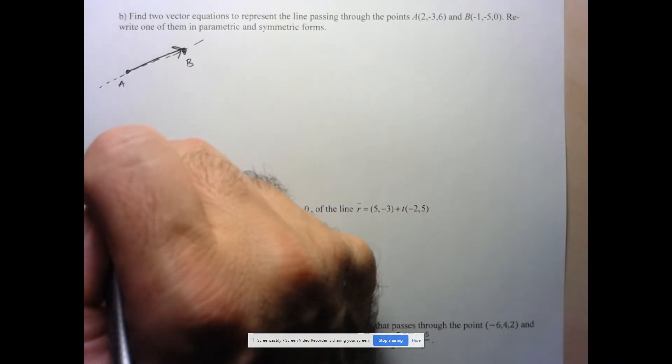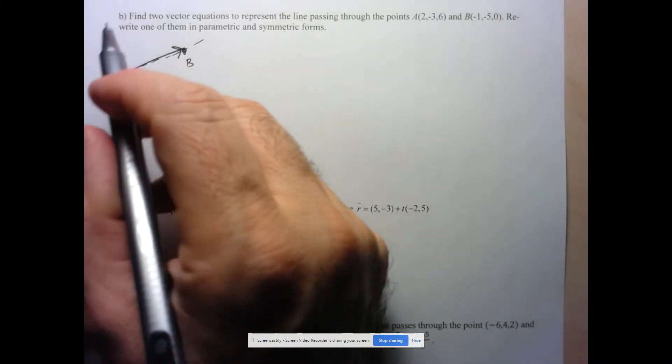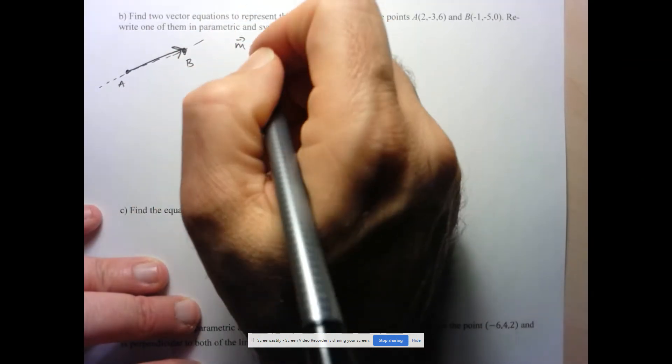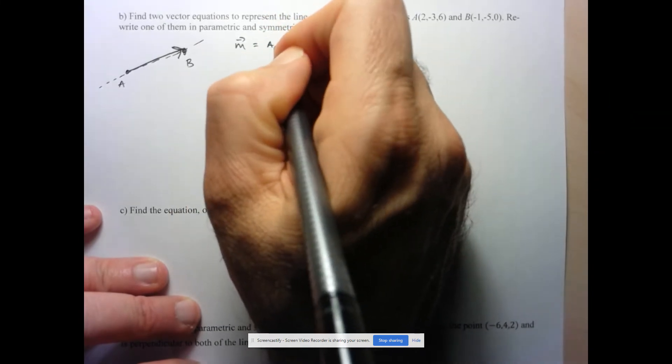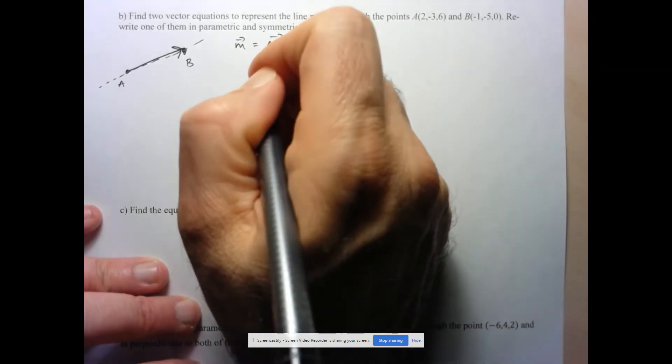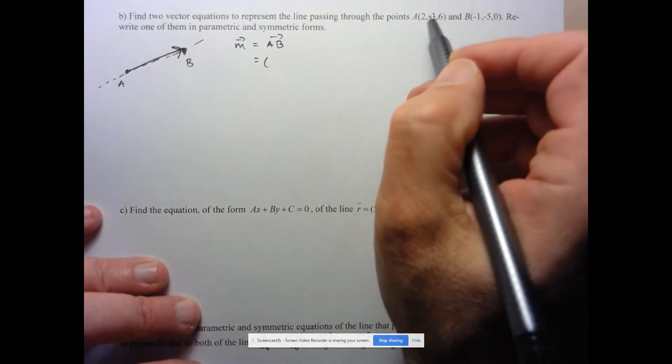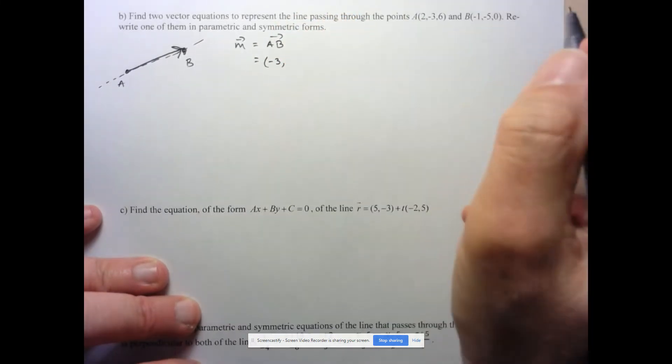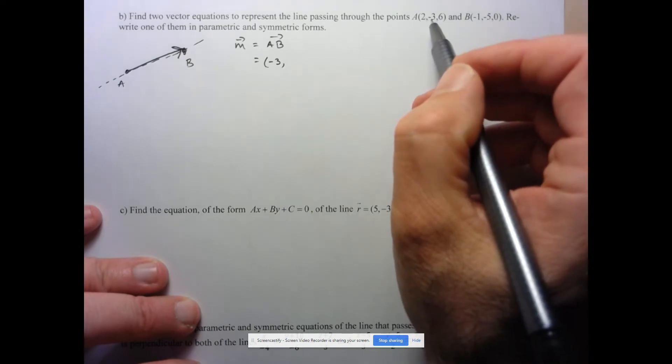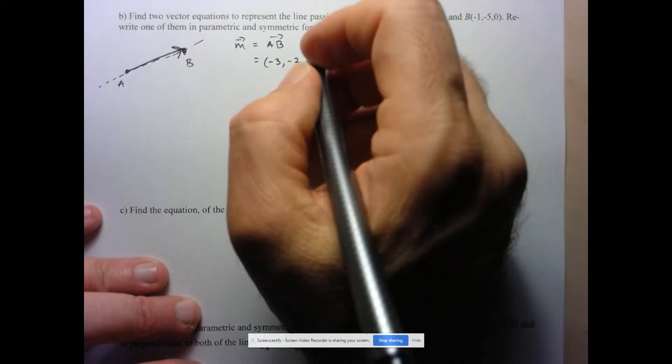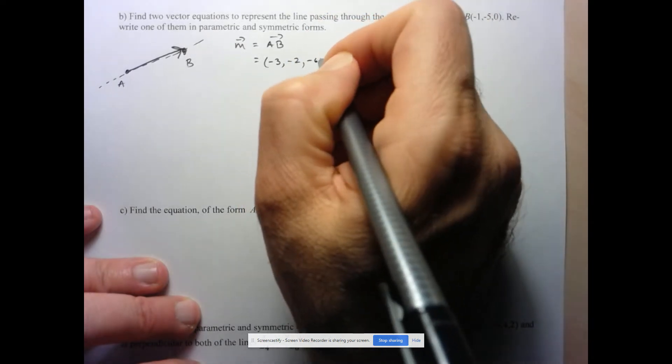So, in fact, I'll use those for my two different equations. So let me take my first one, which will be AB. And what does that give me here? Well, remember, second minus first. So this gives me negative 1 minus 2 is negative 3. This is negative 5 minus negative 3. So negative 5 plus 3 is negative 2. And then here's 0 minus 6 is negative 6.